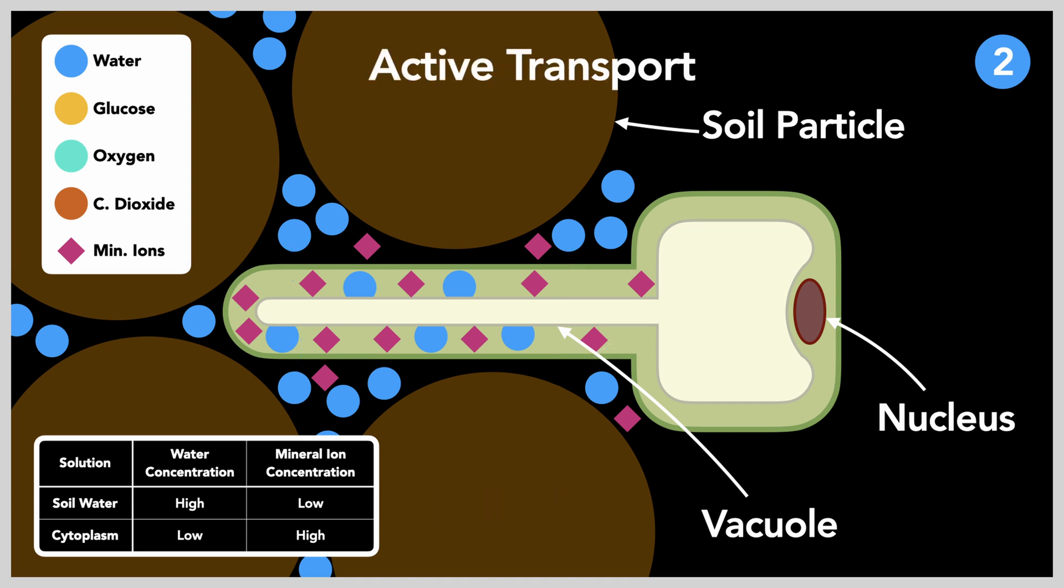Mineral salts are necessary for cell growth and maintaining a concentration gradient between the soil water and the cytoplasm to facilitate osmosis. This concentration gradient has to stay the same in order for osmosis to work, since moving substances against a concentration gradient requires energy. The root hair cell has to use energy and respire to actively transport mineral ions from the soil into the cell's cytoplasm.